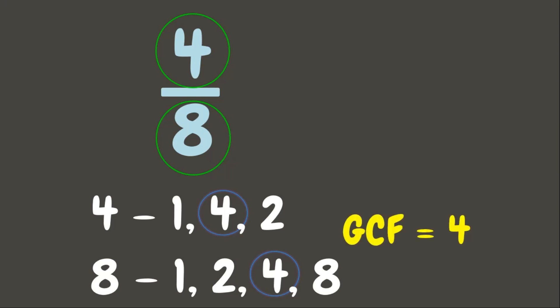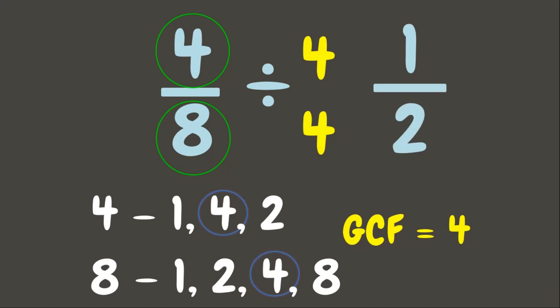Now that we know the GCF, which is four, we are going to divide the numerator and the denominator by four. Four divided by four is one. Eight divided by four is two. So the answer is one-half.